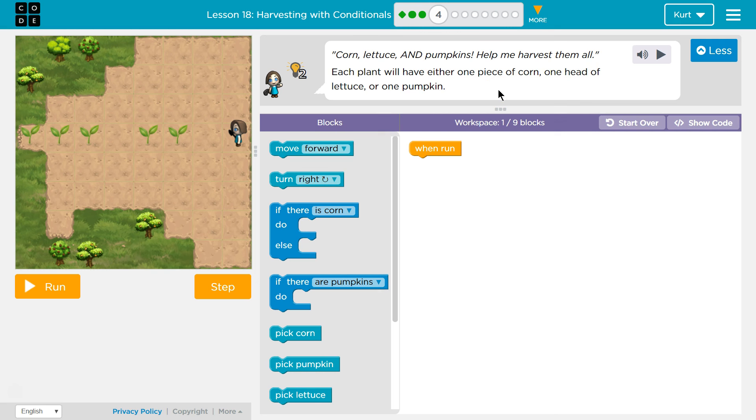Oh, this is getting complicated. So I can tell we can only use nine blocks. We're going to need to check, right? Because we want to know if there's corn, if there's pumpkin, and if there's lettuce.